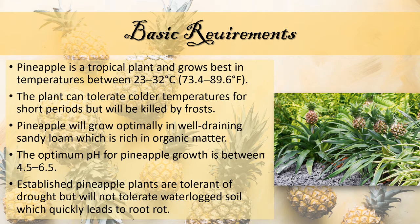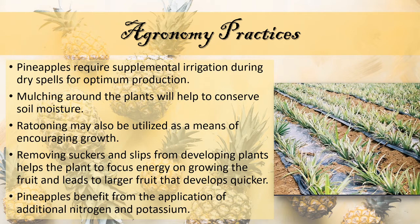Established pineapple plants are tolerant of drought but will not tolerate waterlogged soil, which quickly leads to root rot. Pineapples require supplemental irrigation during dry spells for optimum production, and mulching around the plants will help to conserve soil moisture. Ratooning may also be utilized as a means of encouraging growth. After the first crop of fruit, ratooning the plants will result in new fruit within 18 months. This process may be repeated a second or third time, but then the crop will be rotated to prevent the buildup of disease.